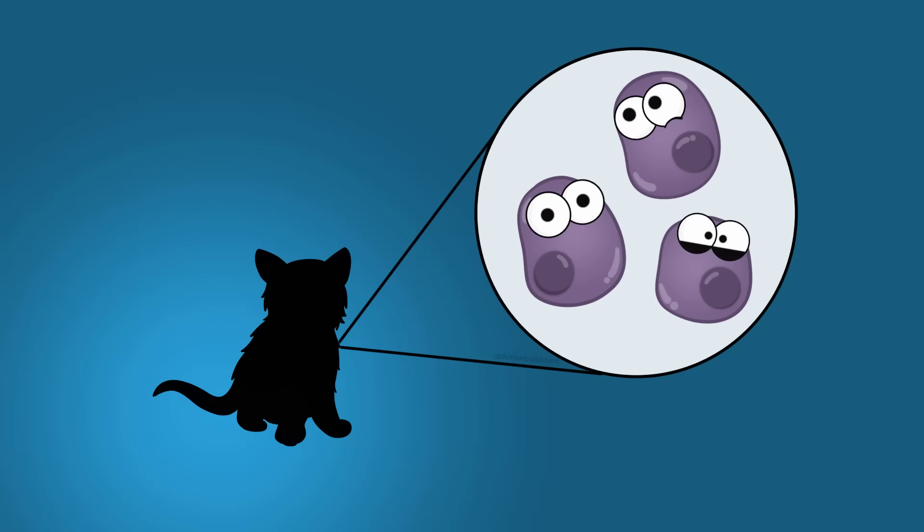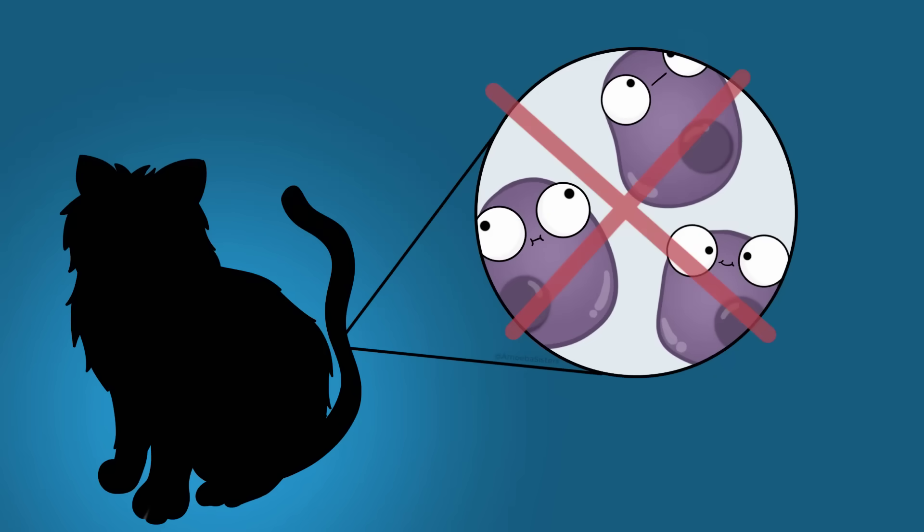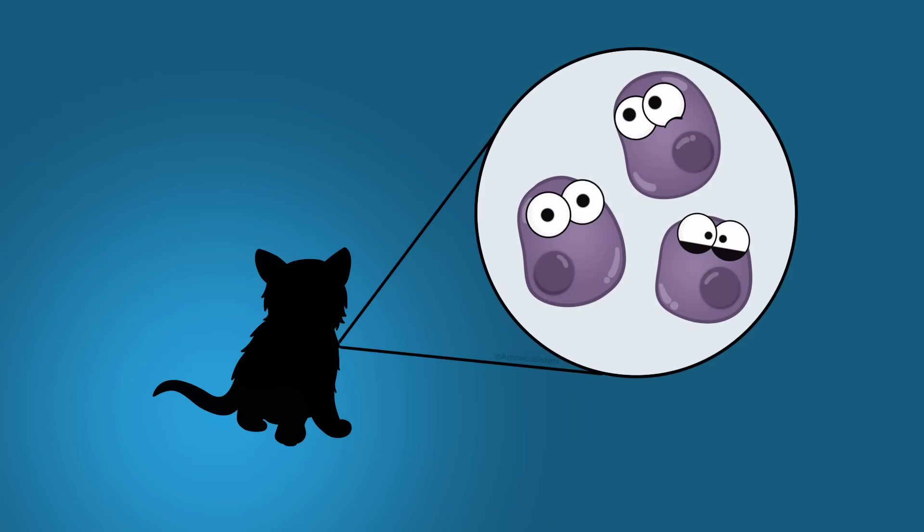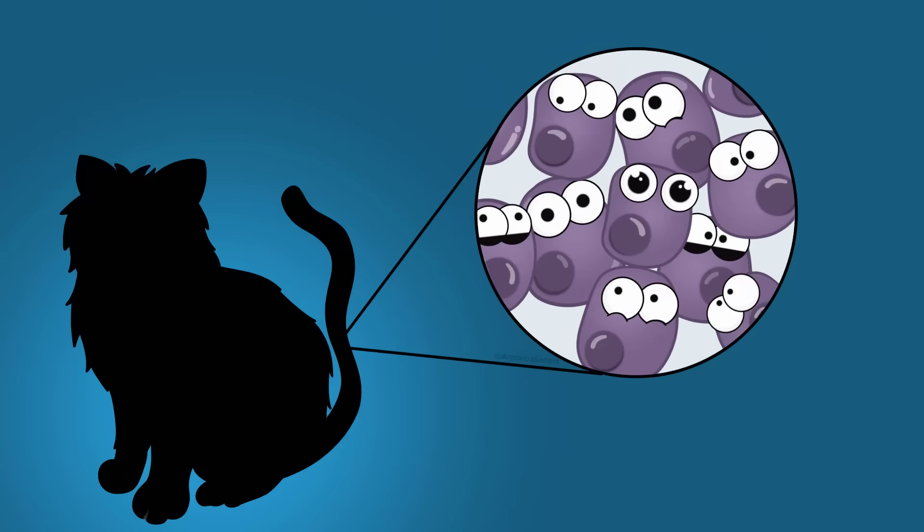A multicellular organism isn't growing because each individual cell is getting bigger. A multicellular organism itself grows by making more cells, by the cells making more cells by dividing.